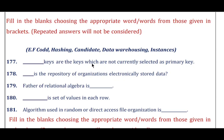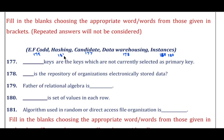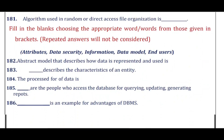Question 177: Dash keys are keys which are not currently selected as the primary key — the answer is candidate key. Question 178: Dash is the repository of an organization's electronically stored data — the answer is warehouse. Question 179: The father of relational algebra is — the answer is E.F. Codd. Question 180: Set of values in each row is called — the answer is instances. Question 181: The algorithm used in random or direct access file organization is — the answer is hashing.